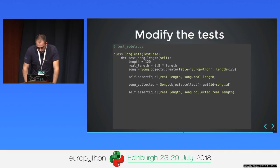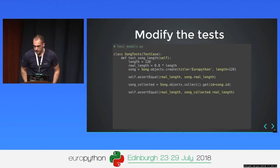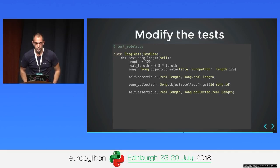A proper test looks like this: we have a song object, we have the expected real_length, and we just assert it. The only thing we need to do is get the object again with Song.objects.collect() using the same ID and assert the same thing. That's the only change in our test. The good thing here is if you have proper tests for every model property, with minimal change you can see if it works.